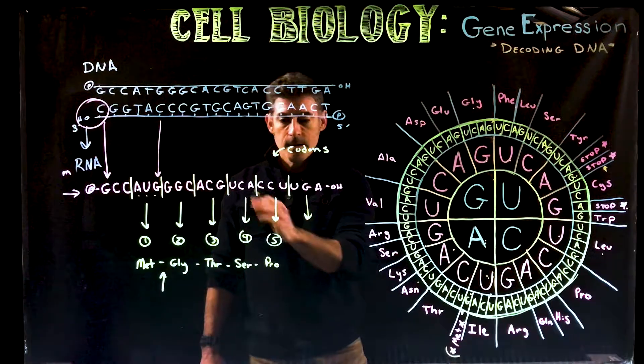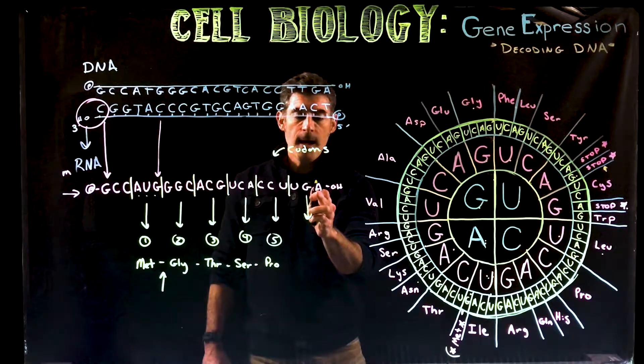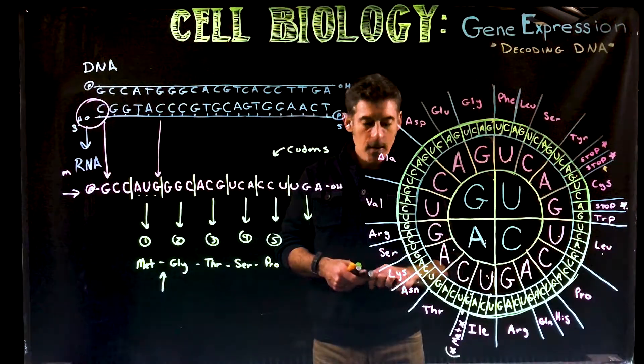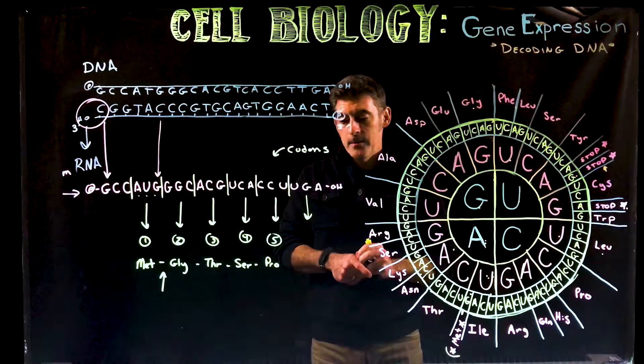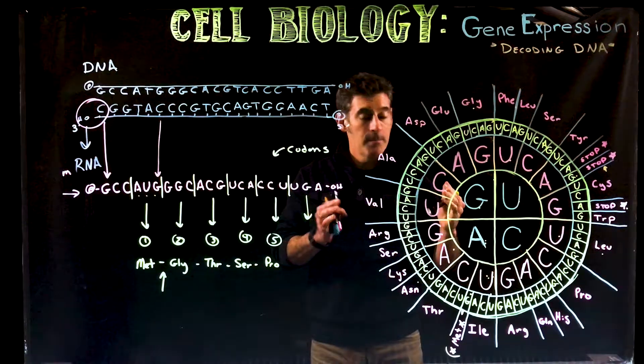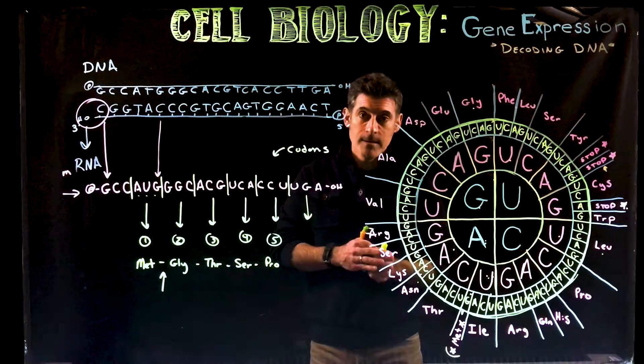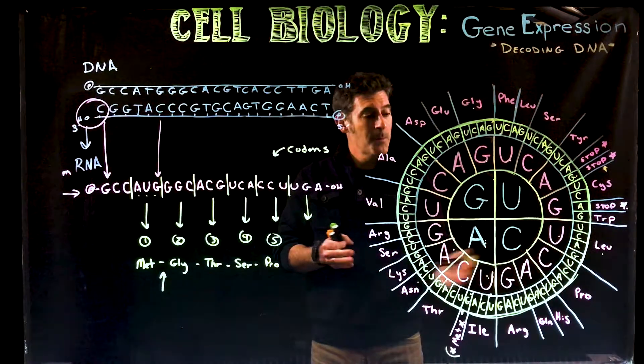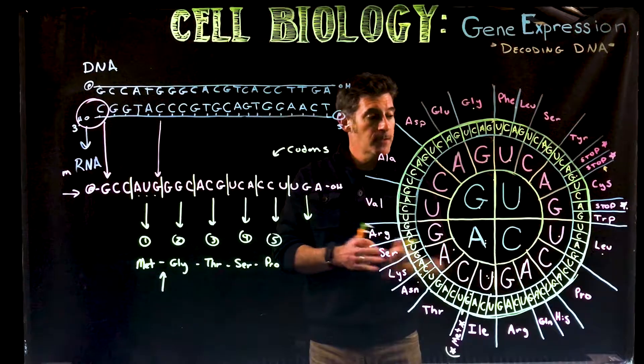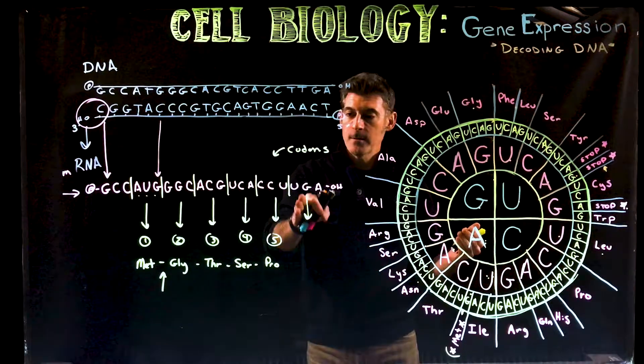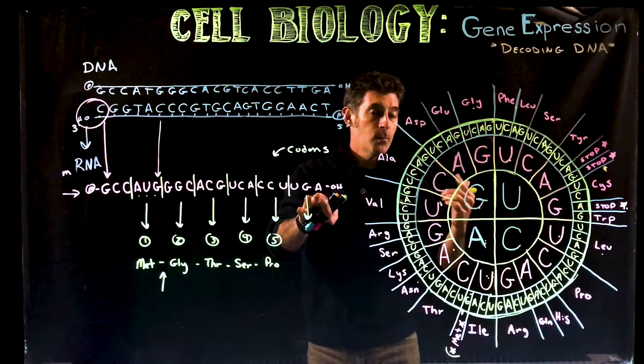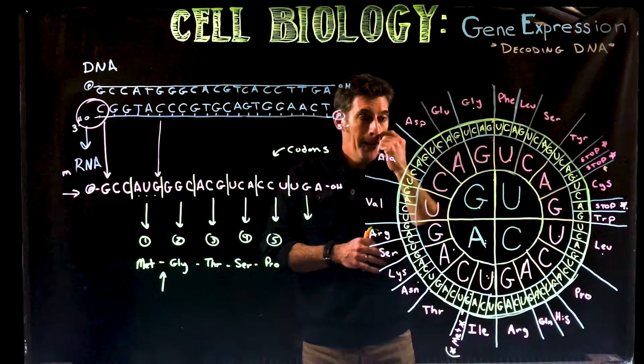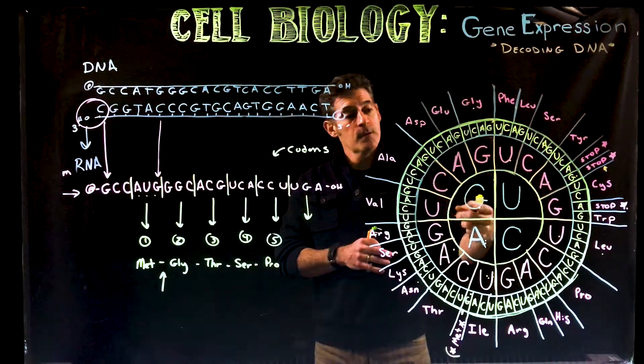We get to this sixth codon that we're reading, UGA. You may remember, that might stand out for you, because there's a few of these that I asked you to memorize. If you're in a biochemistry course or advanced cell biology course, you're probably going to be asked to memorize the actual codons and which amino acids they code for. But this is an intro cell biology course, so we're not really doing that. UGA, though, if you remember, is one of the stop codons.